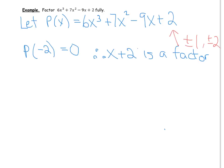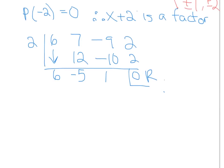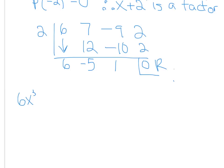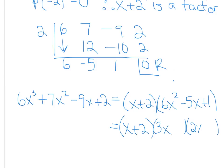Now I'm ready to set up synthetic division. I have my 2 here, and my coefficients are 6, 7, negative 9, 2. Going through that process: 12, subtract to get negative 5, negative 10, which gives negative 9 plus 10 equals 1, then 2 — there's our remainder of 0. So we found that 6x cubed plus 7x squared minus 9x plus 2 equals x plus 2 times 6x squared minus 5x plus 1. We can factor that further to get x plus 2 times 3x minus 1 times 2x minus 1 — and there's factored form.